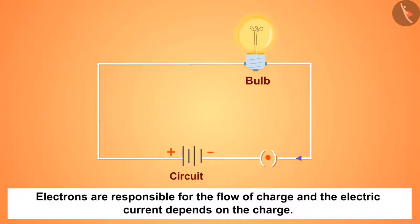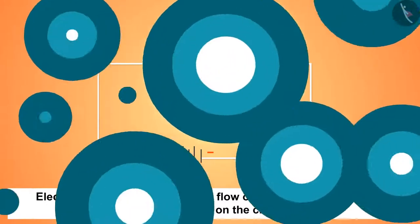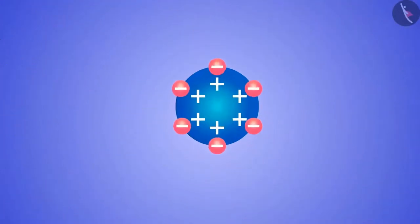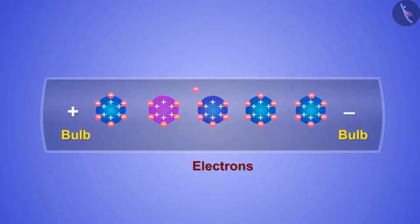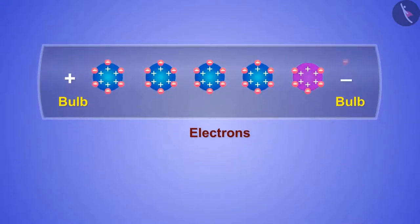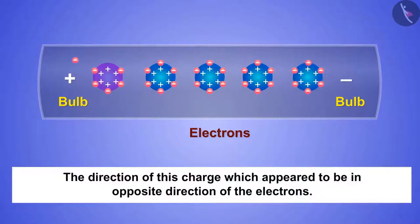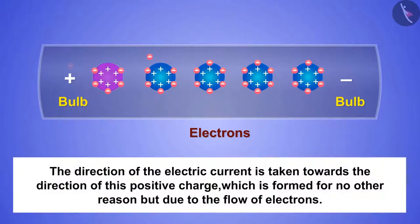But we also know that electrons are responsible for the flow of charge, and electric current depends on the charge — then why does the electric current move in the opposite direction? Due to the flow of electrons, a positive charge is generated in the metallic wires. The direction of this charge appears to be in the opposite direction of the electrons. Here, the direction of the electric current is taken towards the direction of this positive charge, which is formed due to the flow of electrons.